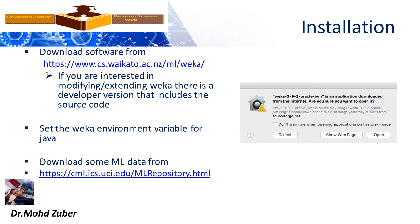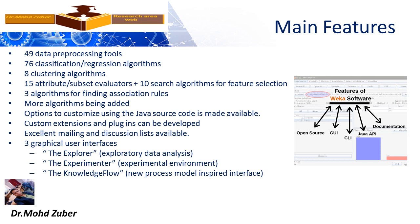You can download some machine learning data from a provided link. Main features of Weka tool: it is open source, has GUI, CLI, and Java API documentation. There are 49 data preparing tools, 76 classification and regression algorithms, 8 clustering algorithms, 15 attribute subset evaluators plus 10 search algorithms for feature selection, and 3 algorithms for finding association rules. More algorithms are being added to Weka tool.